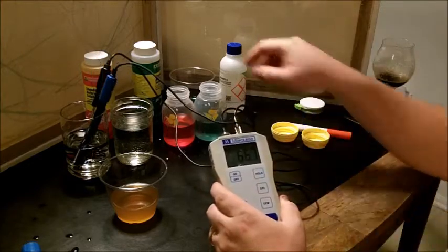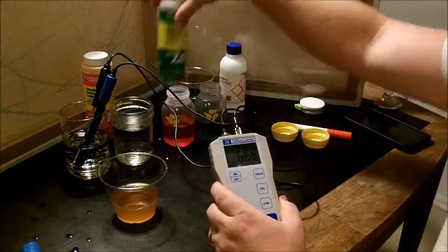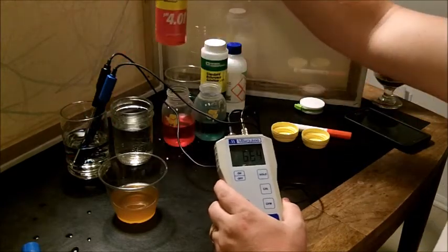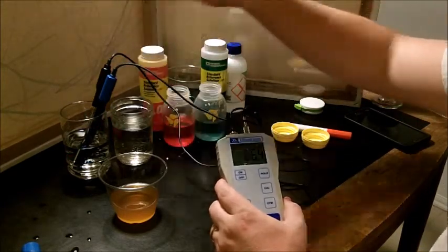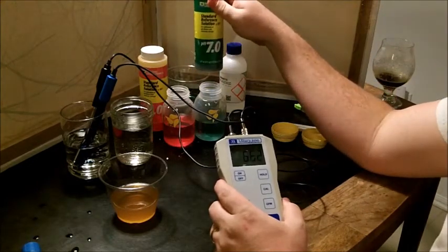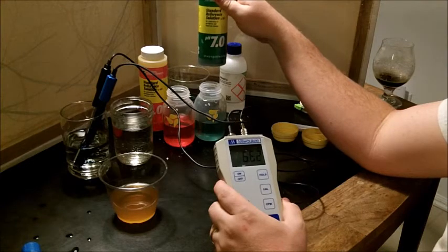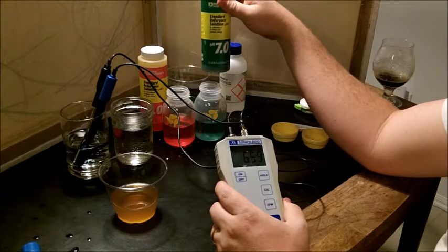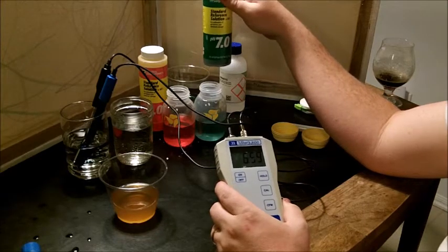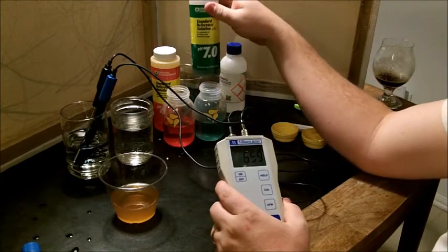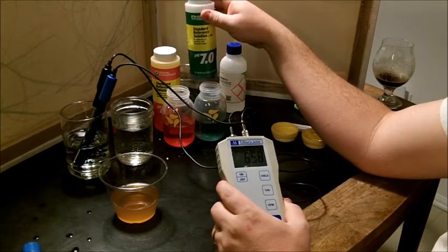To calibrate it, we have two different types of solutions: 7.0 and 4.01 solution. If you were to measure anything beneath 7.0, which is everything as far as beer brewing, you need 7.0 and 4.0.